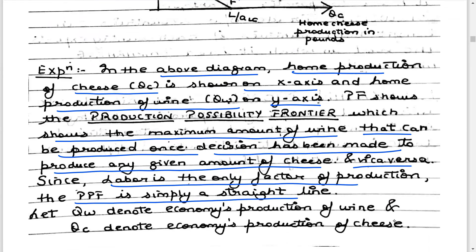Since labour is the only factor of production and has constant returns, the PPF is simply a straight line. In microeconomics we learned about diminishing marginal productivities when one factor is fixed, but here we assume only one factor, labour, with constant returns — meaning every additional pound of cheese or gallon of wine requires exactly ALC or ALW labour hours respectively.